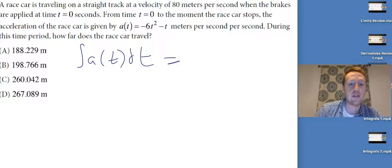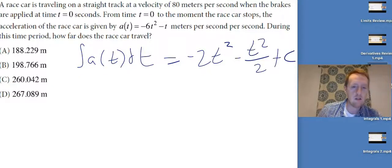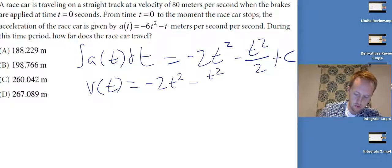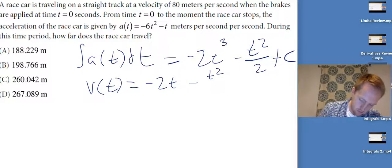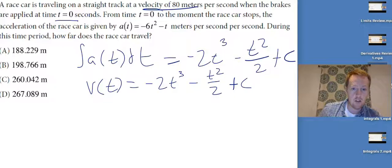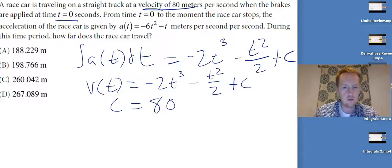The antiderivative of -6t² is -2t³, minus t²/2, plus C. That's my velocity function — I just need to find C. It says at t = 0, the velocity is 80. That sends the first two terms to zero, so 80 = C. Therefore C = 80.